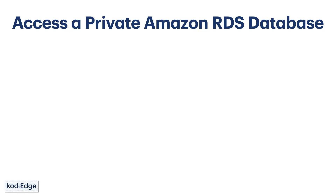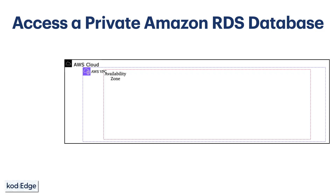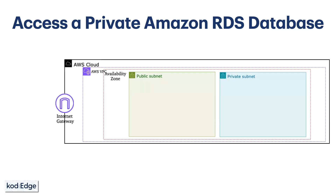Let's understand the components we are going to deploy in the AWS cloud. We will first create a VPC. In the VPC we will have an AZ, and in the AZ we are going to have public and private subnets, and we will also have an internet gateway to connect to the internet.